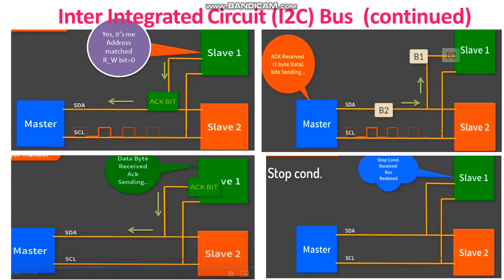The slave device with the address requested by the master responds by sending an acknowledgement bit over the SDA line. Upon receiving the acknowledgement bit, the master device sends the 8-bit data to the slave device over the SDA line, if the requested operation is a write to device. The master device waits for the acknowledgement bit from the slave upon byte transfer completion for a write operation, and sends an acknowledgement bit to the slave for a read operation. Finally, the master terminates the transfer by pulling the SDA line high when the SCL clock line is at logic high, which signals the stop condition.